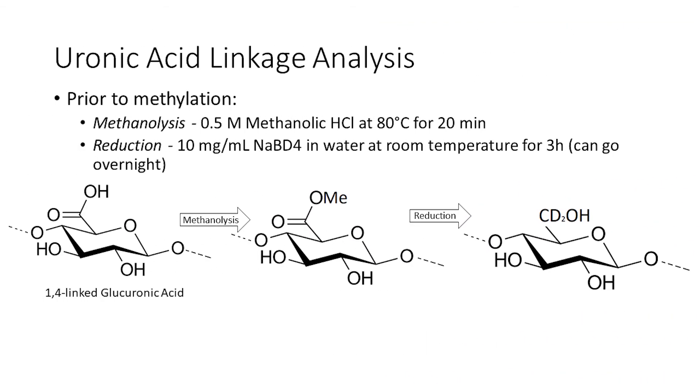Now, let's discuss how to perform linkage analysis to observe uronic acid linkage residues. Prior to the methylation discussed in the standard neutral sugar linkage procedure, the sample undergoes a methanolysis and reduction. A mild-conditioned methanolysis esterifies the carboxylic acid into a methyl ester. This activates the carboxylic group to be reduced to a hydroxide group with two deuterol groups replacing a double bond to one of the oxygens.